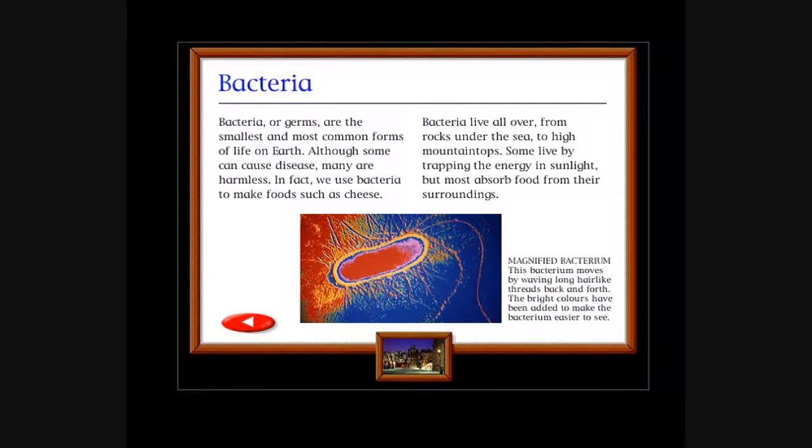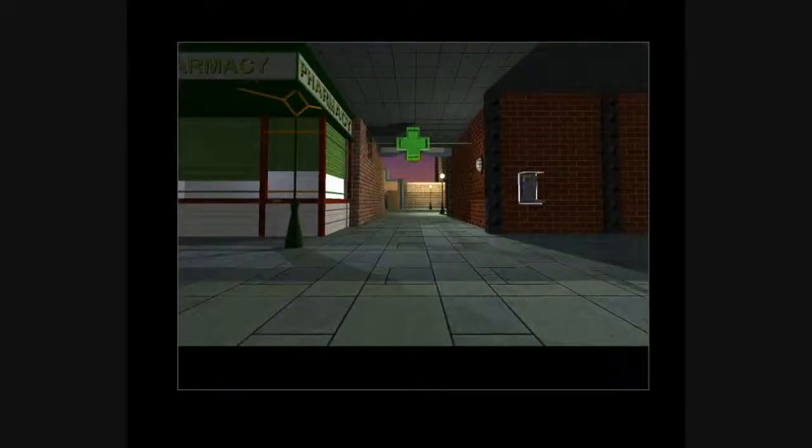It's locked in, stuffed itself in the bacteria. No, it's raping the poor thing. Bacteria: Bacteria germs are the smallest and most common forms of life on earth. Although some can cause disease, many are harmless. In fact, we use bacteria to make food such as cheese. Bacteria live all over, from rocks under the sea to high mountaintops. Some live by trapping the energy in sunlight, but most absorb food from their surroundings. This bacteria moves by waving long hair-like threads back and forth. Yes, we're covered in them and the air pressure is making sure they stay tightly on us.